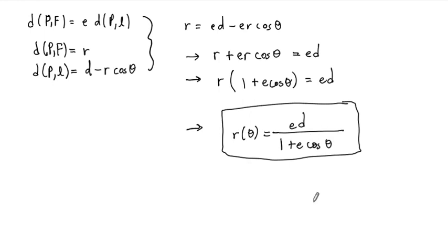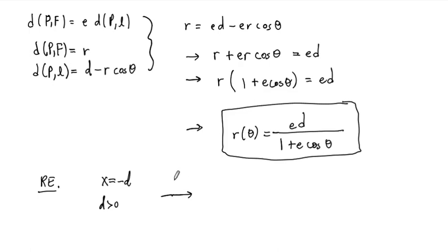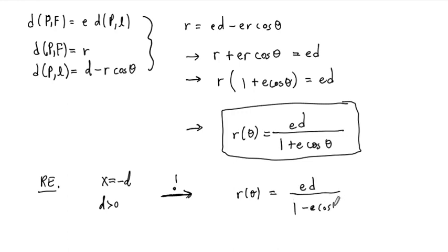In the next exercise, you're going to work out a formula for a horizontal directrix. If you change the directrix to X equals minus D, where D is still positive — so now this is a negative directrix — the work is straightforward and just copies what we just did. Work this out as a recommended exercise.